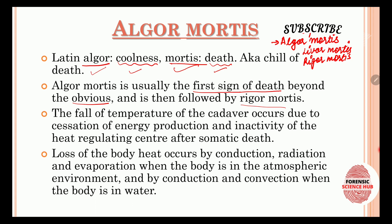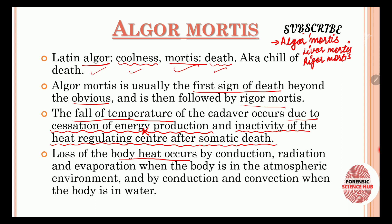In Algor Mortis, there is a fall of temperature — the body starts to cool down. This occurs due to the cessation of energy production: since the body is dead, there is no energy production and hence no heat production. It also occurs due to the inactivity of the heat-regulating centers after somatic death, meaning the cells are dying, so there is no heat regulation or homeostasis, resulting in a fall in the temperature of the cadaver.